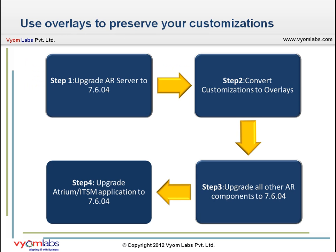This diagram explains the basic steps for implementing overlays. First, you upgrade only the AR System server to release 7604. Then you use the BPCU to convert your customizations to overlays. Next, upgrade all other AR System components such as Remedy Approval Server, Assignment Engine, Email Engine, and the AR LDAP and ARDBC LDAP plugins to release 7604. Lastly, upgrade your AR System based applications such as BMC Atrium CMDB and the ITSM suite to 7604.